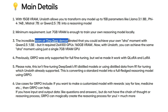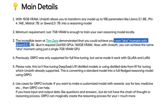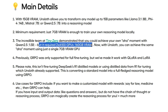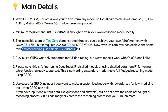It was again Tiny Zero which demonstrated that we could achieve the aha moments with Qwen 2.5 1-billion parameter as well, but they required 160 GB GPU or two H800 GPUs. With Unsloth today, we're going to see that on a free Google Colab notebook you can achieve this aha moment with just a single 7 GB VRAM GPU. We are going to test out this model.